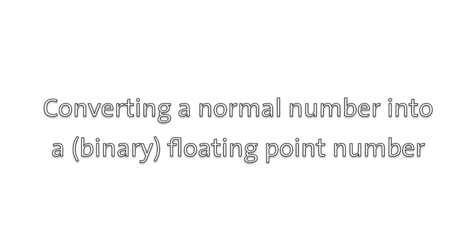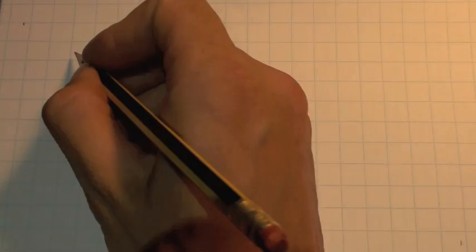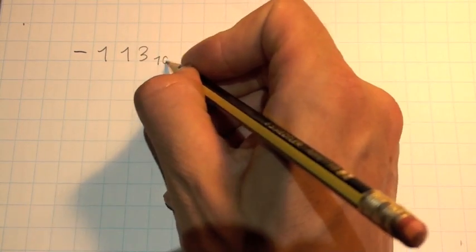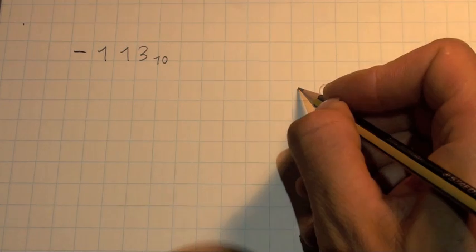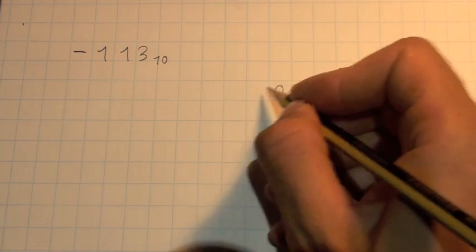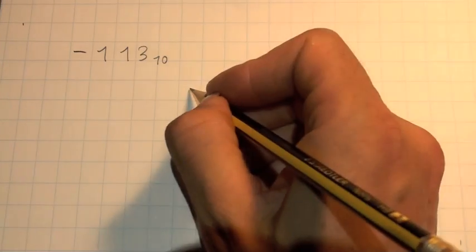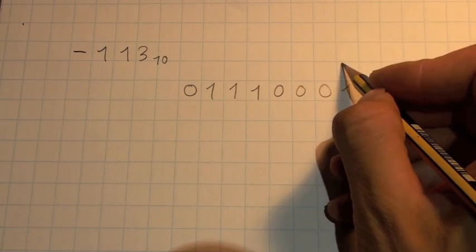We've already looked at turning a floating-point binary number into a normal number. Now let's look at a negative normal number and turn it into a binary floating-point number using 2's complement. We're going to use an 8-bit number.